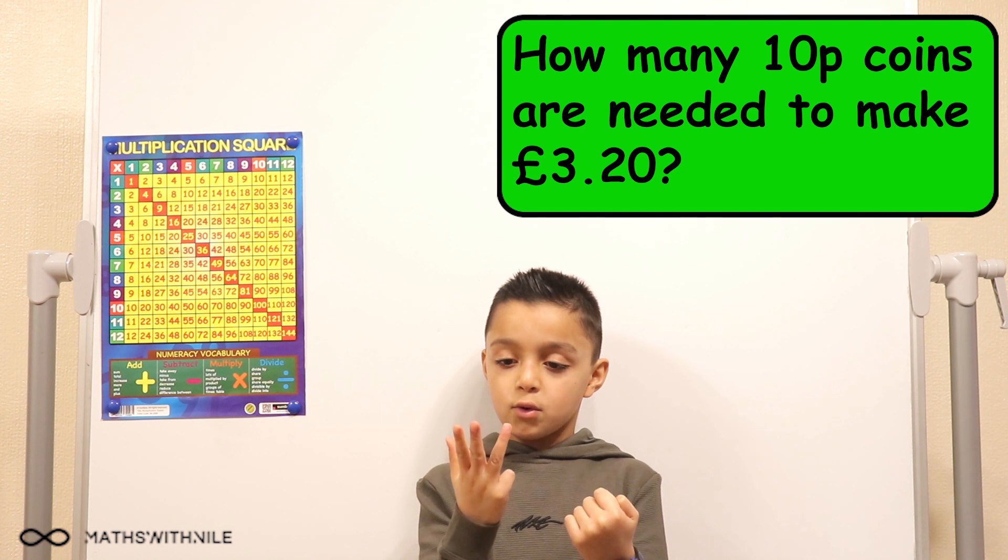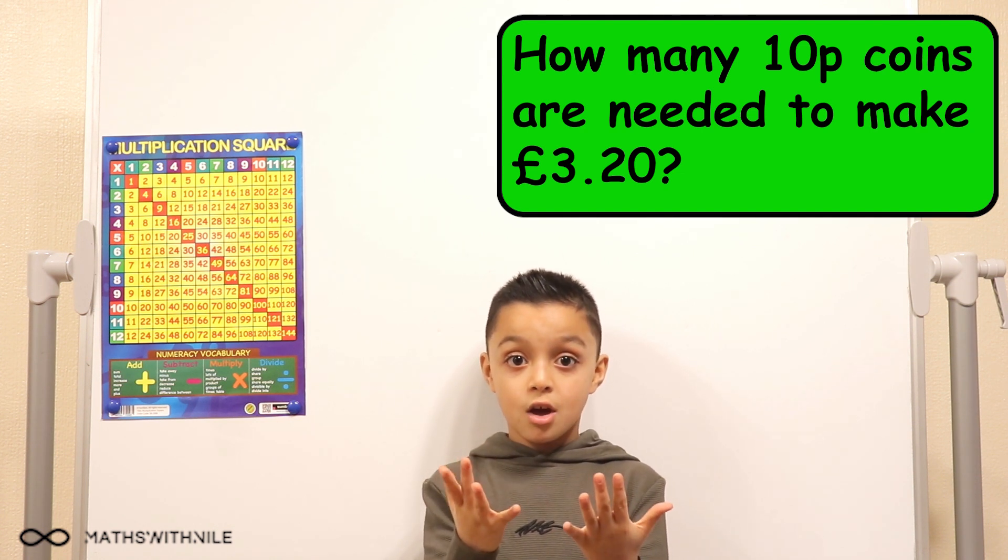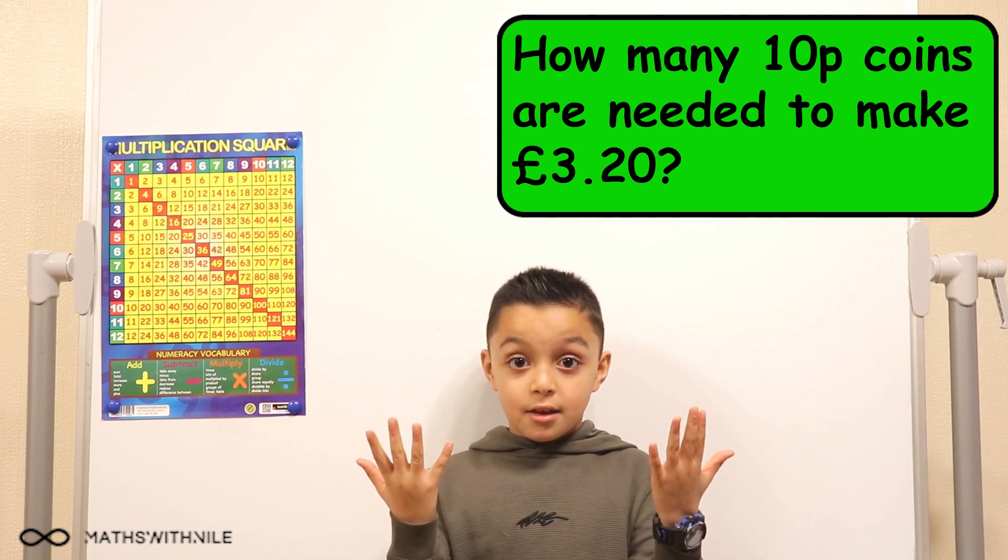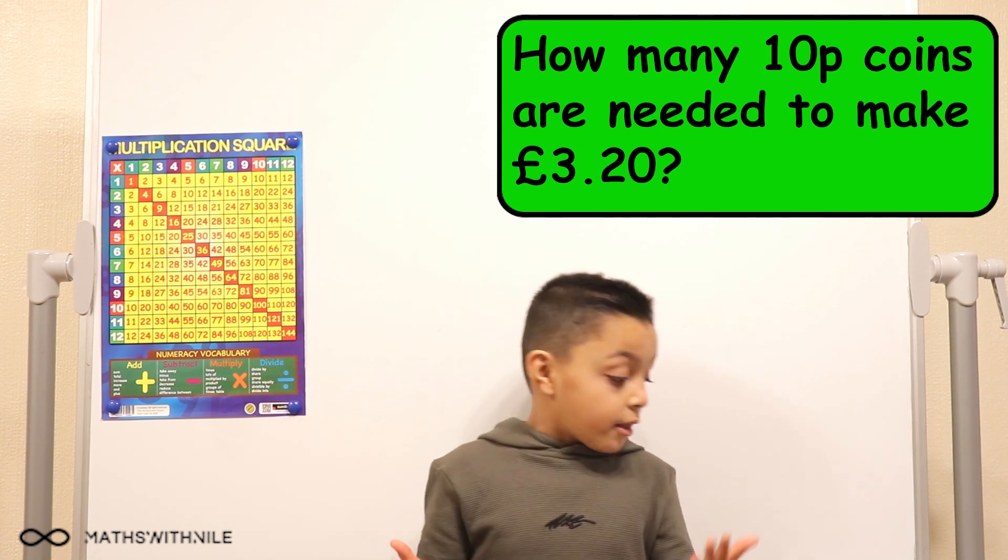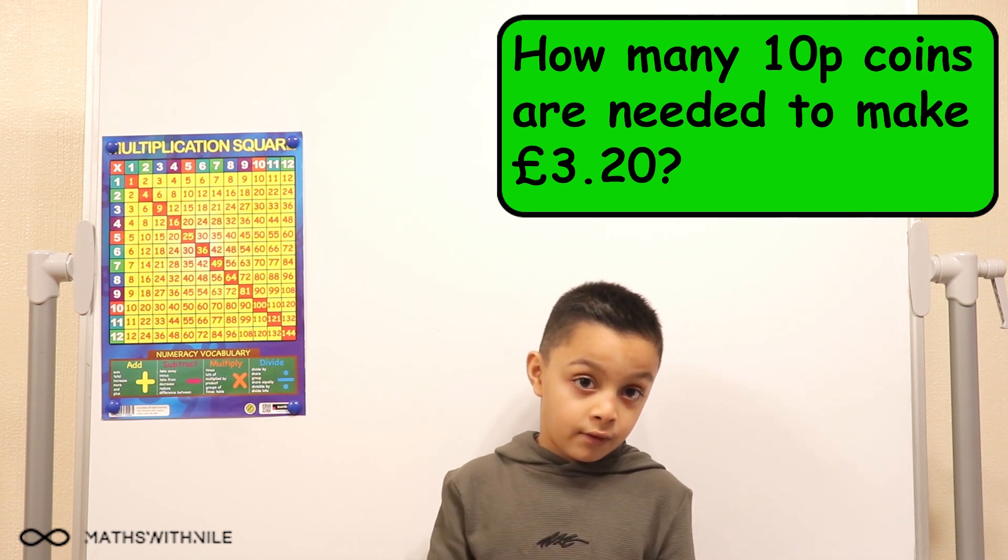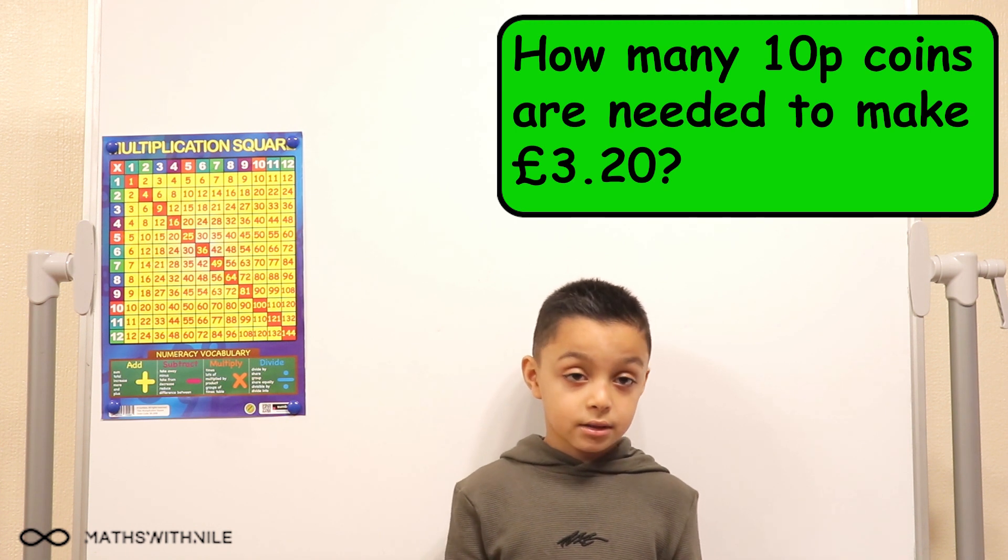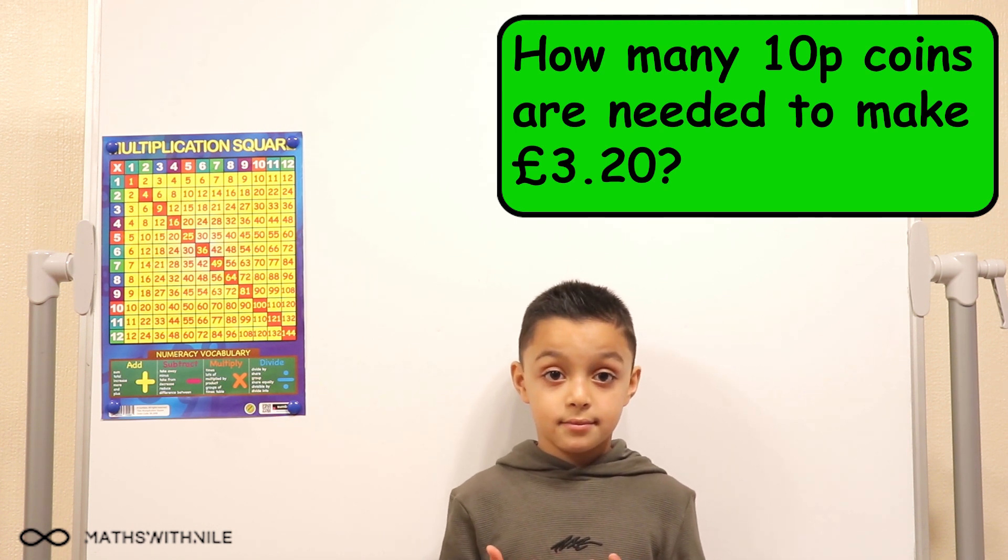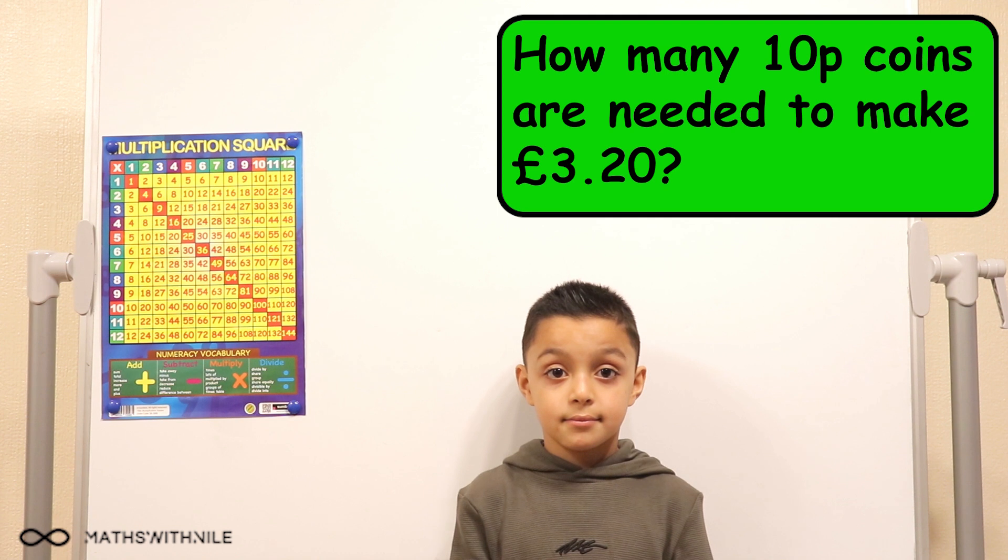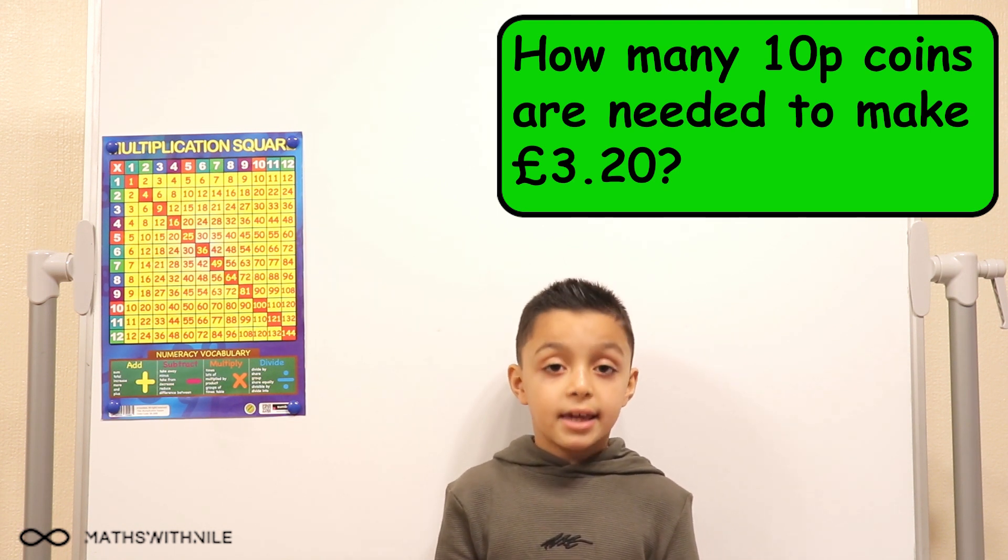10, 20, 30, 40, 50, 60, 70, 80, 90, 100. So how many? 10. Okay. So 10. So 10 times 3 because it's £3 equals 30. Okay. Very good. So what you're saying in 1 pound you have 10 10ps. Yeah. So in 3 pounds you times the 10 by 3 so you have 30. Yeah.